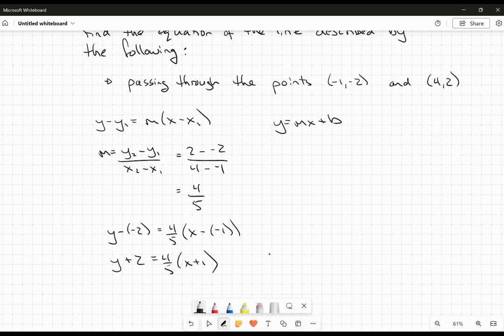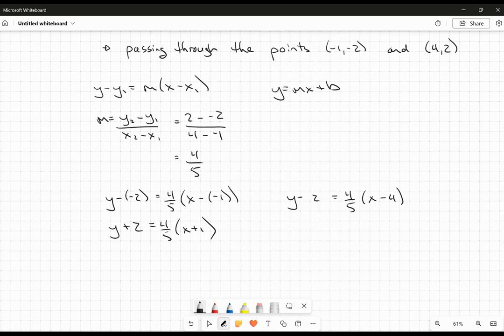Or you could have written it as y minus 2 is equal to 4 fifths multiplied by x minus 4. And again, I have no problem with that. In fact, I don't even really need those parentheses right there. So those are two versions of the line here.